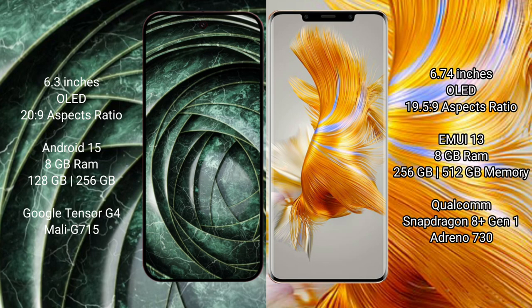Google Pixel 9a runs on the Android 15 operating system. Huawei Mate 50 Pro runs on the HarmonyOS operating system. Google Pixel 9a comes with 8GB RAM and 128GB to 256GB internal storage.